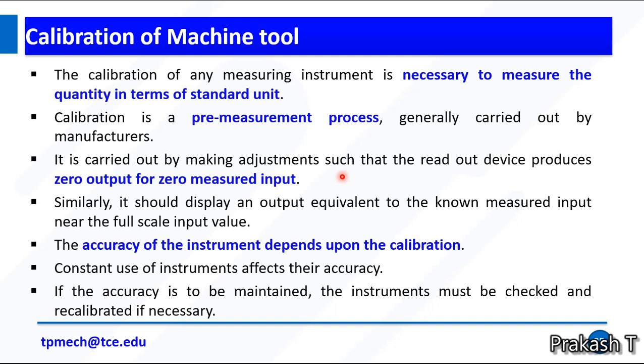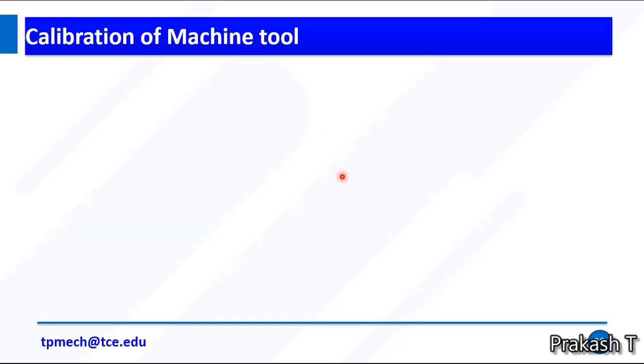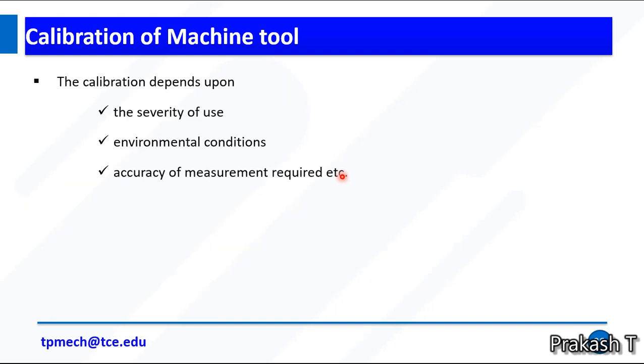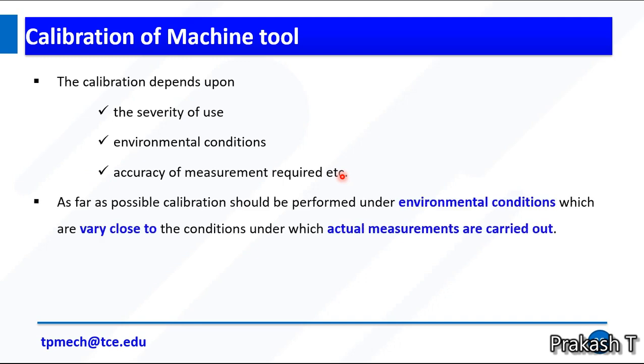Calibration is generally done by manufacturing people, the company representatives. Normally, it is done before and after purchasing the equipment and then after some particular usage. The calibration depends on the severity of use, environmental conditions, and accuracy of measurements required. As far as possible, calibration should be performed under environmental conditions which are very close to the conditions under which actual measurements are carried out. If the output of the measuring system is linear and repeatable, it can be easily calibrated.